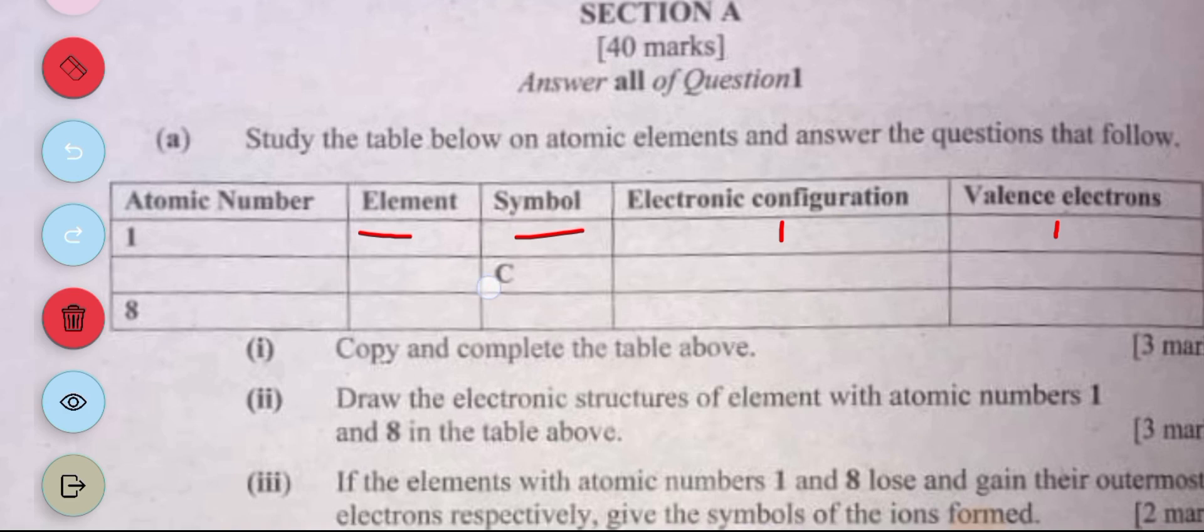Then you have C here which is carbon. The name of the element is carbon. The atomic number is 6. Electron configuration is 2 comma 4. Valence electron is 4.